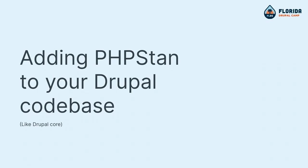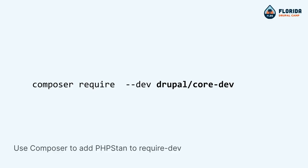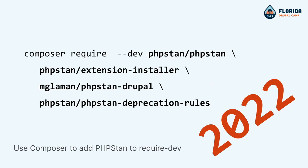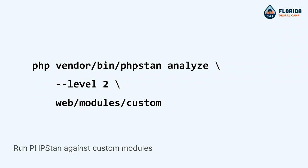Here's how you add PHPStan to your Drupal codebase. It's real simple — actually no, it's really hard, so brace yourself. Composer require --dev drupal/core-dev, which you already have because you're writing tests. That's how you do it because PHPStan is a dependency of Drupal's dev meta package. Two years ago you had to add PHPStan, the extension installer, PHPStan Drupal, and the deprecation version separately — it's really cool that Drupal adopted these tools and it's that easy now. Then to run it, you just do php vendor/bin/phpstan analyze, pass --level 2 and a path, and it will go scan everything.